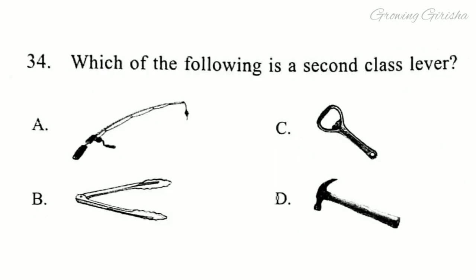Question 34. Which of the following is a second class lever? Answer is option C: Bottle opener.